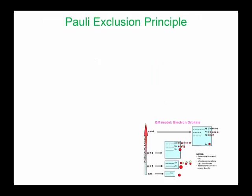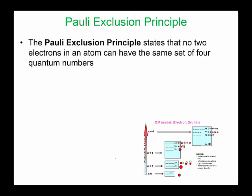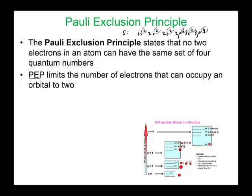Here's the Pauli exclusion principle. It states that no two electrons can have the same set of four quantum numbers — they're specific, so every electron has its own set of four quantum numbers. Using sulfur as an example, all 16 electrons will have their very own set of four quantum numbers. The Pauli exclusion principle (PEP) limits the number of electrons that can occupy an orbital to two.